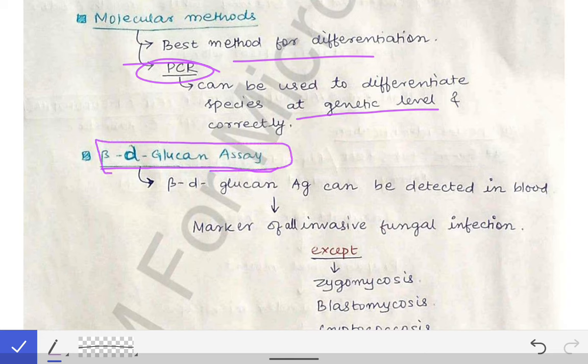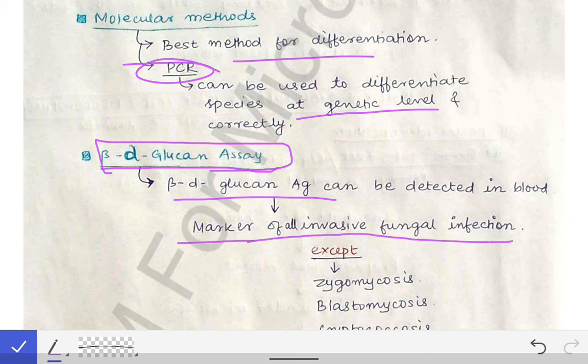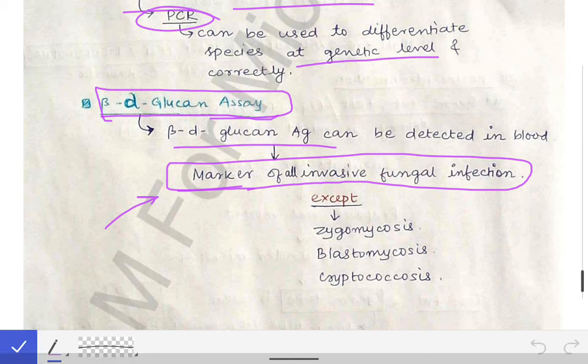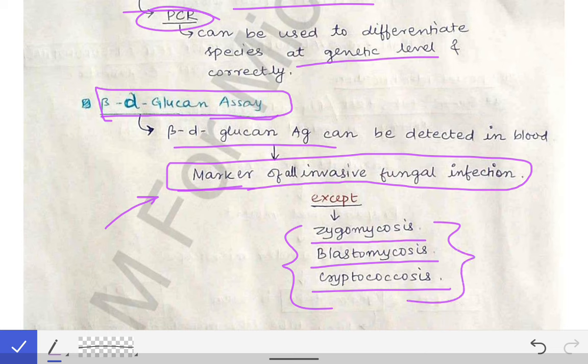The beta-D-glucan assay is important for invasive fungal infections. The beta-D-glucan antigen is elevated in the blood in all invasive fungal infections. However, there are three exceptions — remembered as ZBC: Zygomycosis, Blastomycosis, and Cryptococcus — where beta-D-glucan is not elevated. In all other invasive fungal infections, it will be elevated.